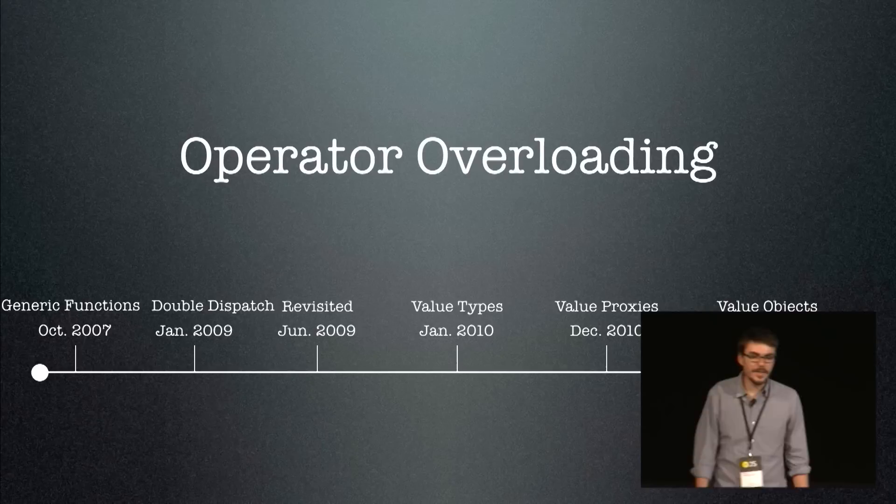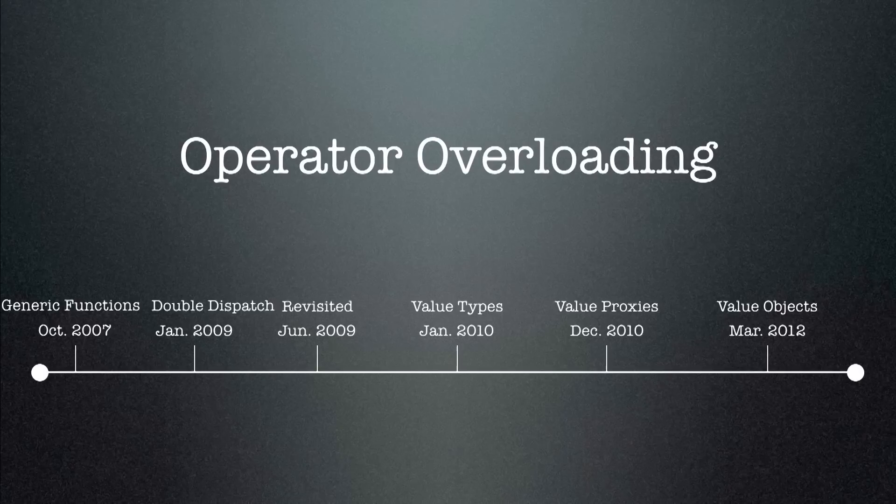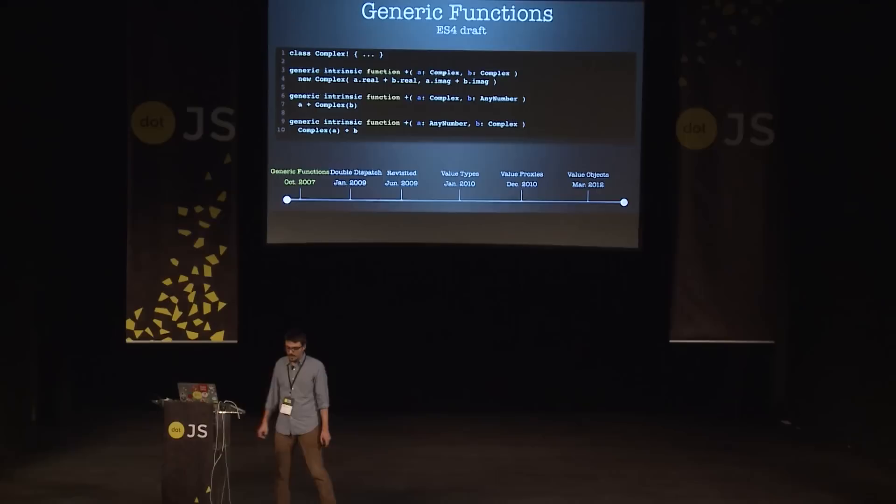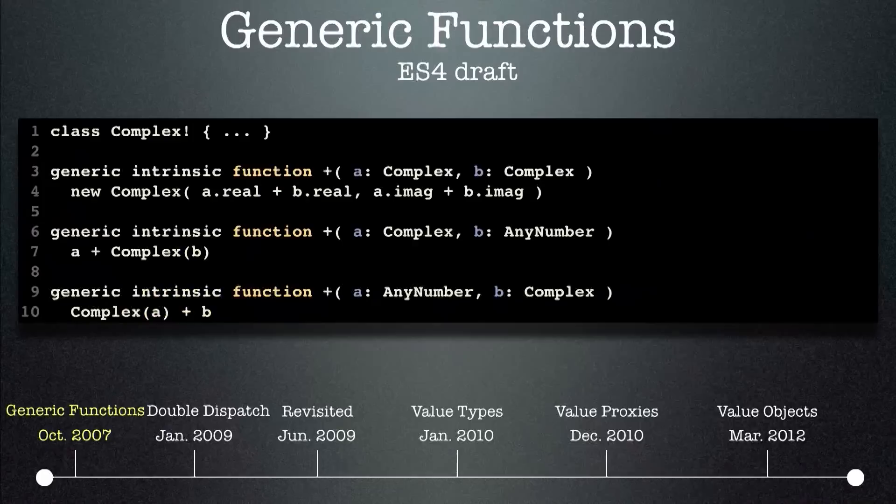How did we get here? There's a long timeline of proposals for operator overloading. Every time someone on ES Discuss talks about adding a decimal type, it becomes an operator overloading conversation, dies, then resurrects. The first one I know of was in ES4 — in the ES4 draft from October 2007 — about generic functions: defining classes and having functions defined separately from the class.